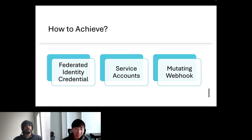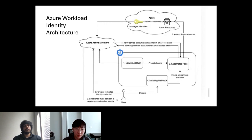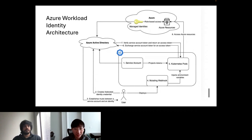Once our Kubernetes cluster can issue tokens to workloads, we can establish a trust relationship between our cluster and an identity in AAD. Once AAD acknowledges this relationship, we can exchange tokens issued by the cluster for a valid AAD token, which we then use to access Azure resources. In Kubernetes, a service account represents an identity that workloads can use. Kubernetes administrators can set RBAC rules against service accounts to control what workloads can access within the cluster. Azure workload identity also contains a mutating admission webhook, whose job is to intercept workload admission requests and project the service account token to the containerized workload's file system, while also injecting several environment variables.